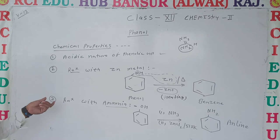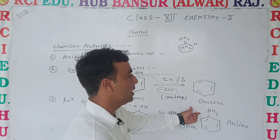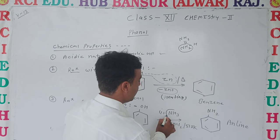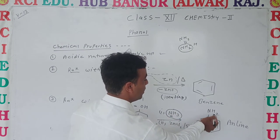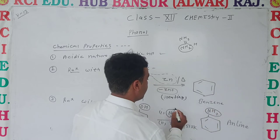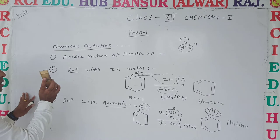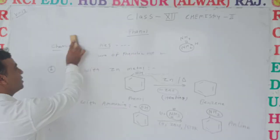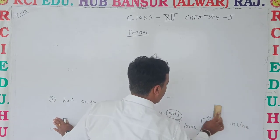In the formation of aniline from phenol — the process is very easy. When ammonia comes in, the NH2 group gets attached. The OH group is removed and the NH2 group is added in its place. This substitution results in the formation of aniline from phenol.